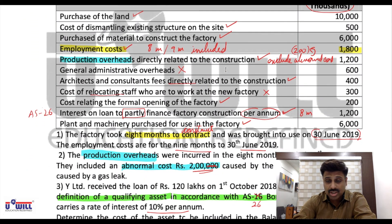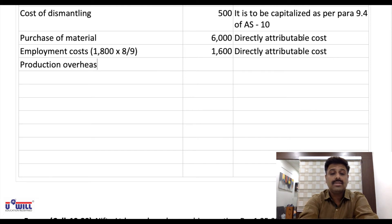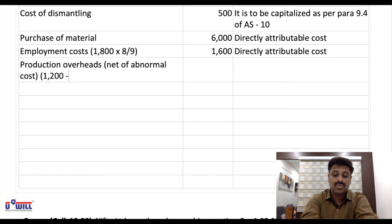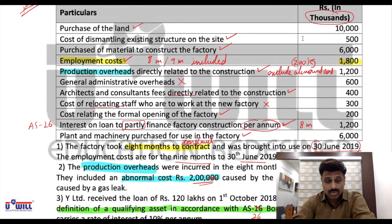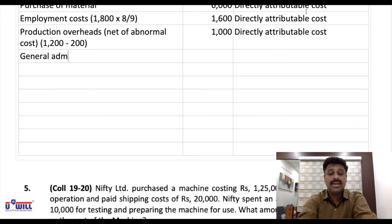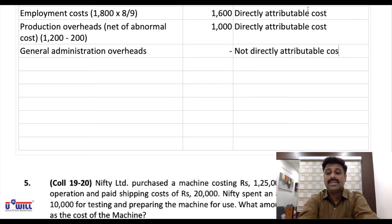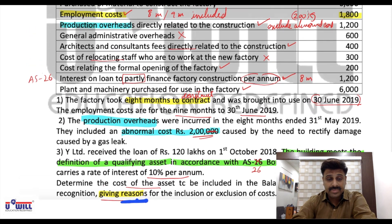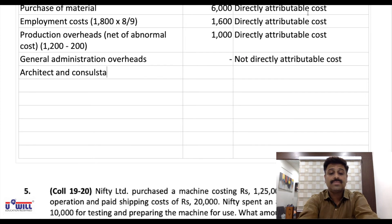Production overheads net of abnormal cost: 1,200 minus 200 (abnormal) = 1,000 — included. Reason: directly attributable cost. General administration overheads — not included. Reason: not directly attributable cost, as referenced in yesterday's theory. Architects and consultants fees: 400 — included. Reason: directly attributable cost.